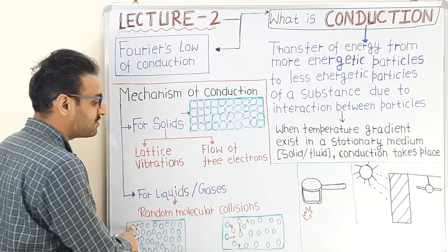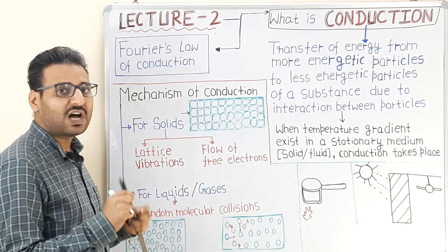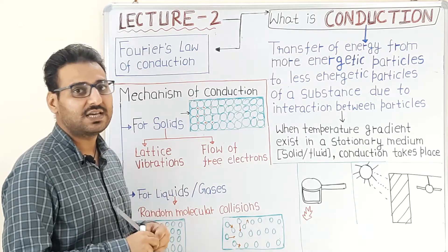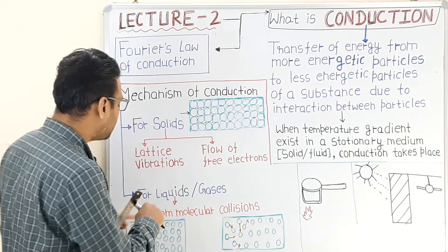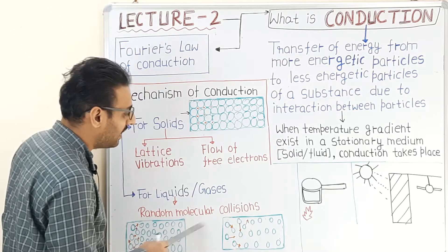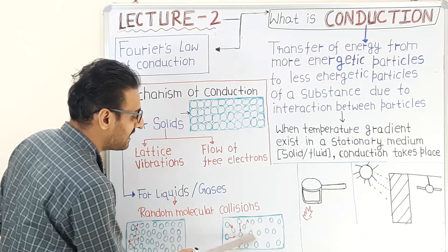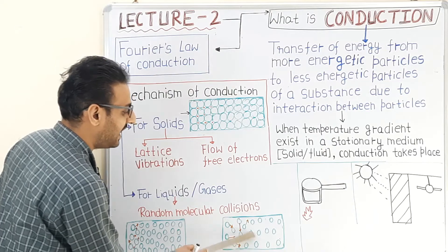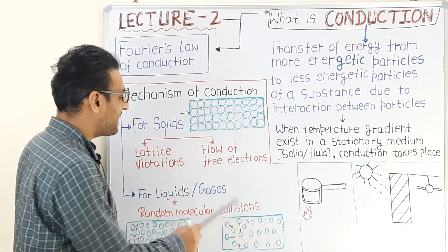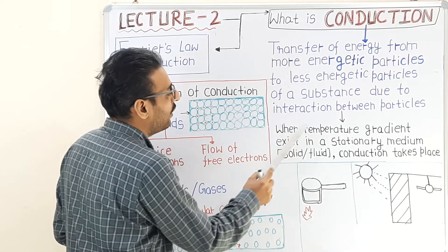In liquids and gases, the more energetic particles move randomly. When they move and collide with neighboring particles, they transfer their kinetic energy to those particles. After the energy transfer, the temperature of the neighboring particles increases, and this process continues. Due to these random molecular collisions between more energetic and less energetic particles, energy is transferred and heat is conducted.